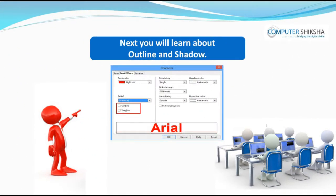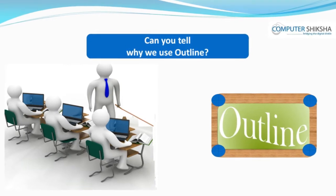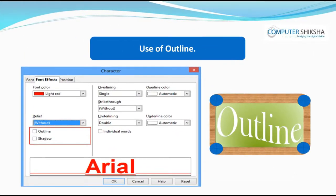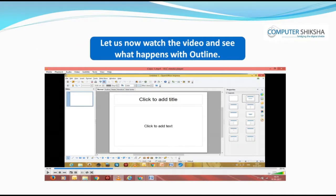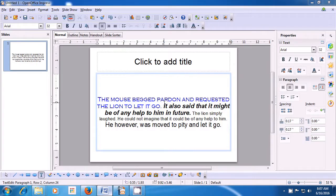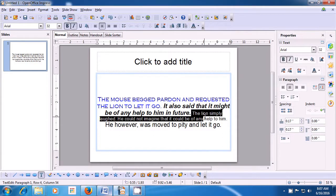Now you will learn about Outline and Shadow. Can you tell why we use Outline? When we use Outline, each character of our text only appears in outline and there is no solid fill color inside the characters. Let us now watch the video and see what happens with Outline. Let us now learn how we use the Outline option. In whichever line or text we want to use the Outline option, we first need to select that. As is being shown in the video, we select the line where we want to apply the Outline option.